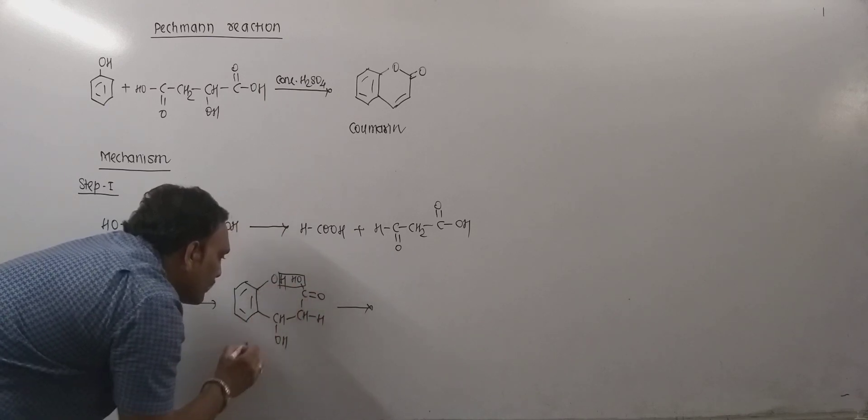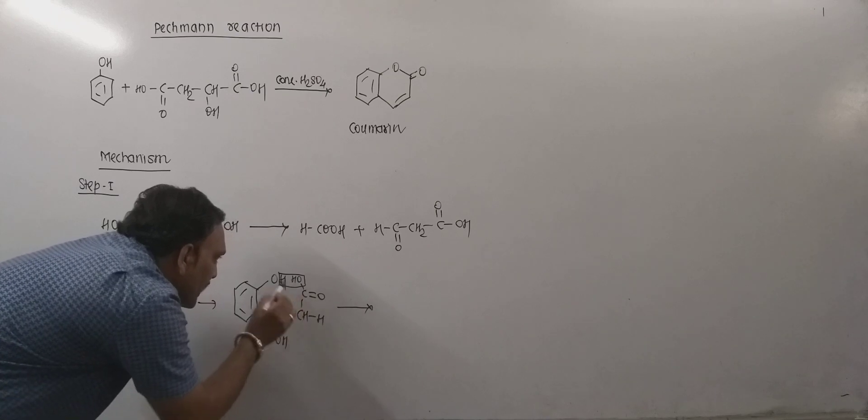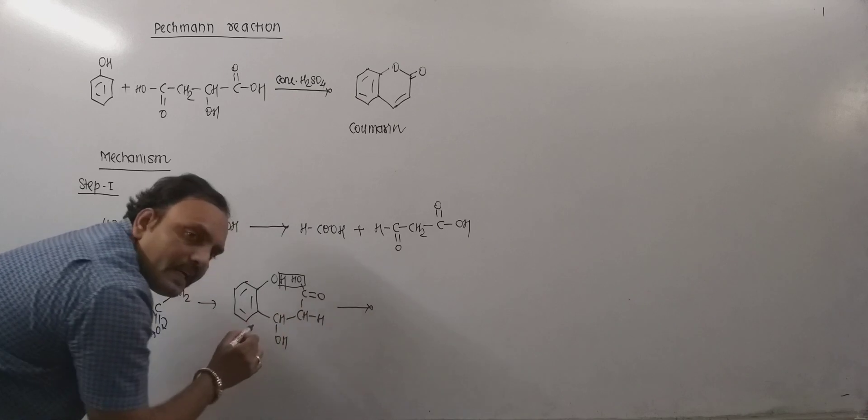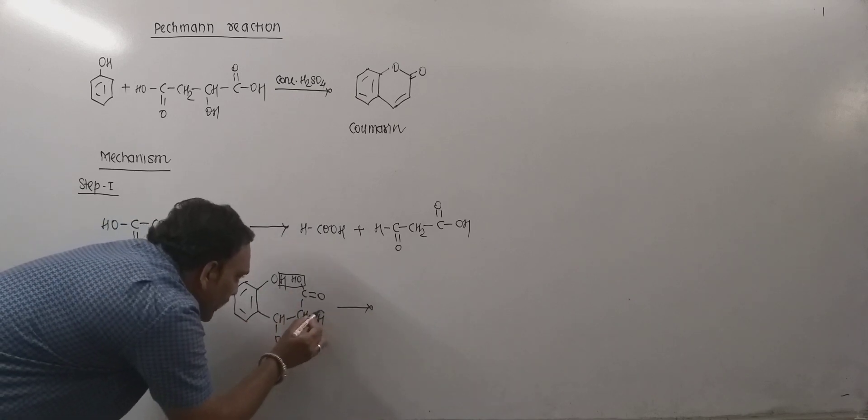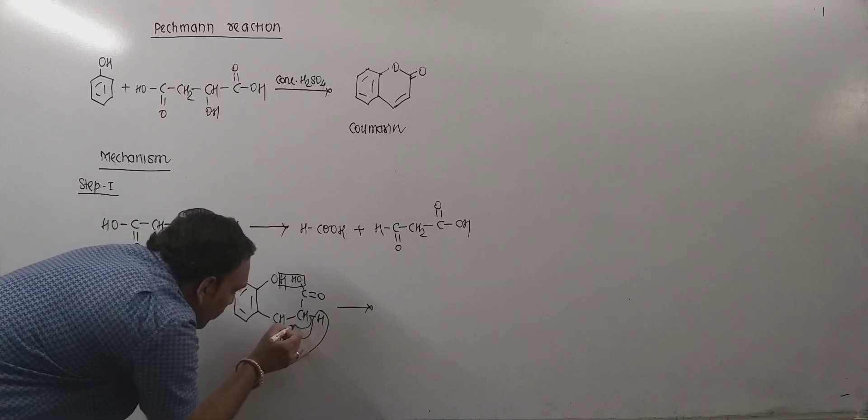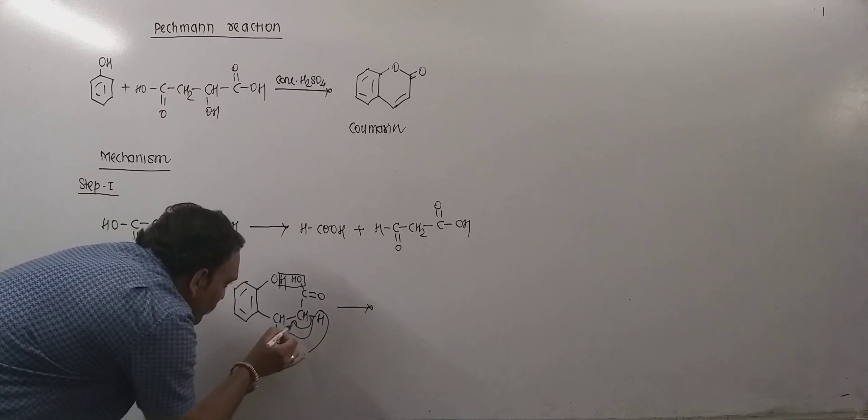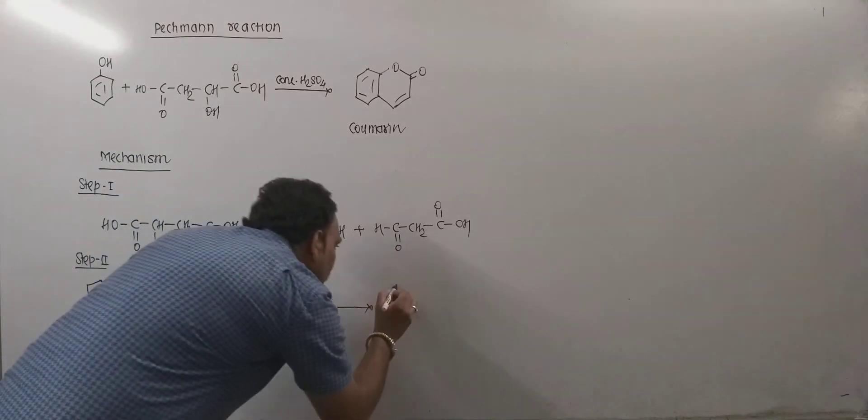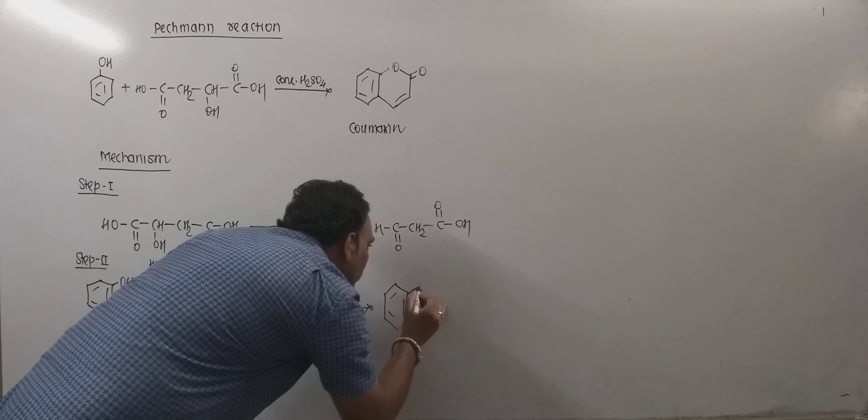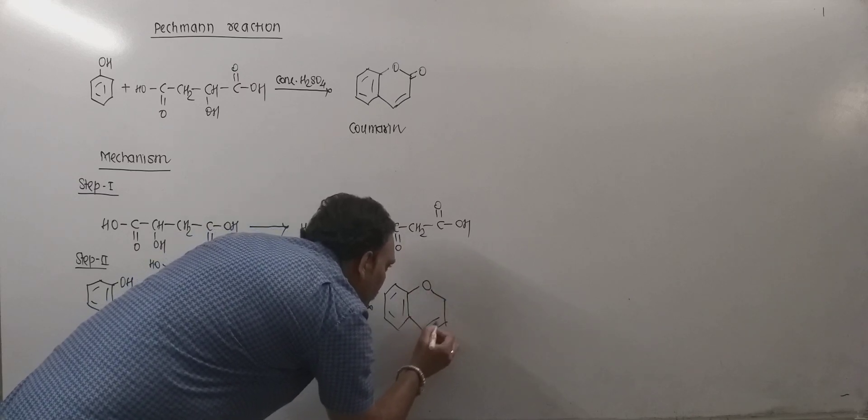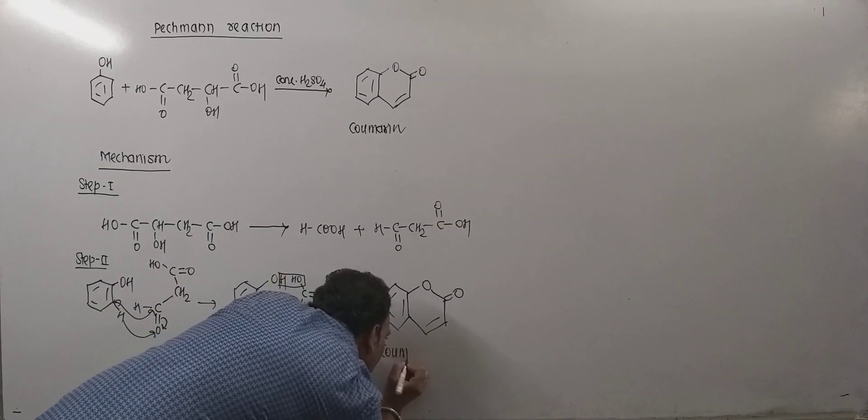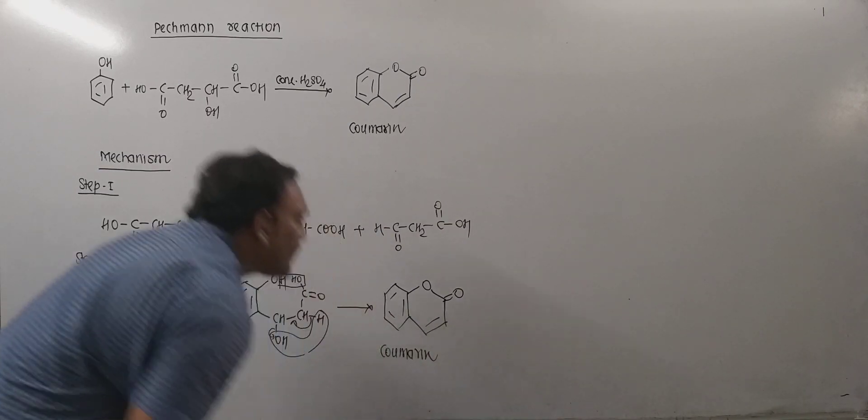From this site water molecule gets lost. There is a linkage between oxygen and carbon, and water gets removed. This electron pair may shift like this, and that leads to the formation of a product which is nothing but the coumarin.